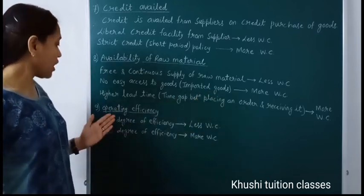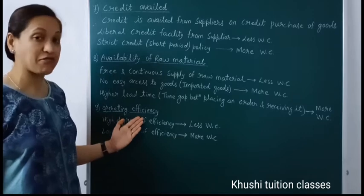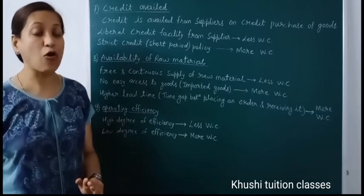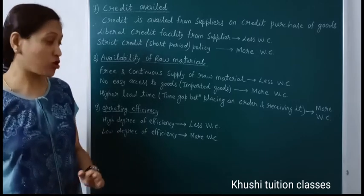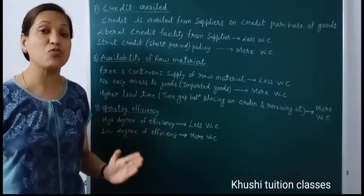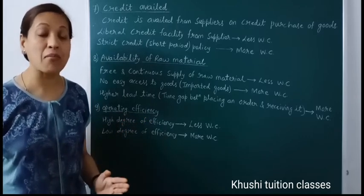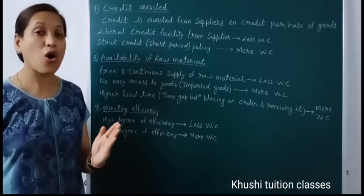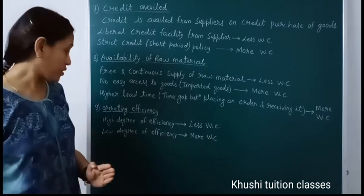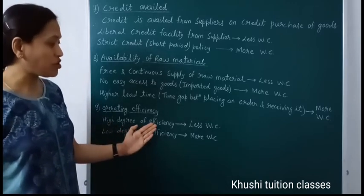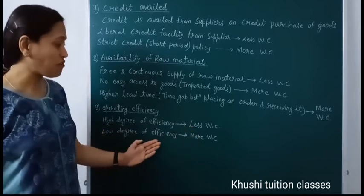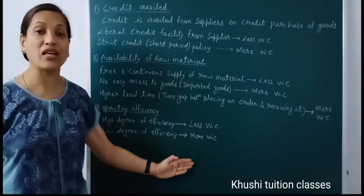The ninth factor is operating efficiency. Efficiency is the relation between cost and output — minimum cost, maximum output. If your organization is operating efficiently, meaning wastage is very low and cost is very low, then a high degree of efficiency will need less working capital, while a low degree of efficiency requires more working capital.